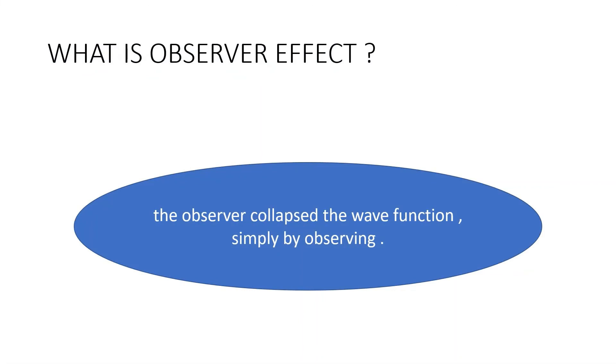So finally, we can conclude what is this observer effect in quantum mechanics? It is the observer collapse the wave function simply by observing.